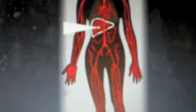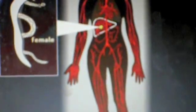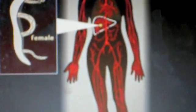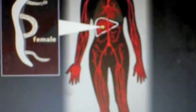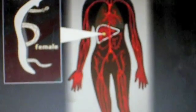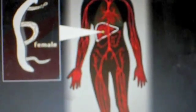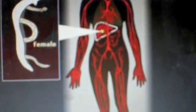Once in the liver, they mature into adult worms and form male and female pairs. This process takes about 45 days. The adult worm pairs then migrate to their final resting site.